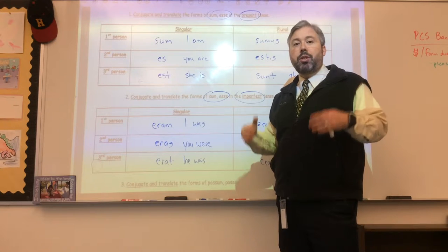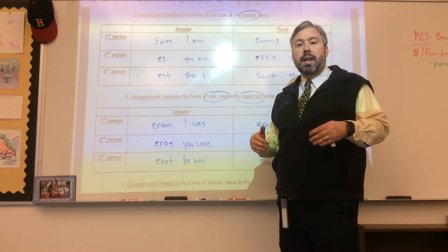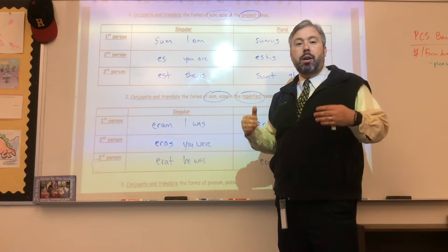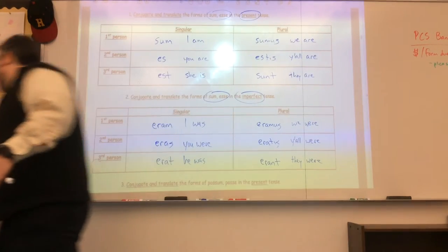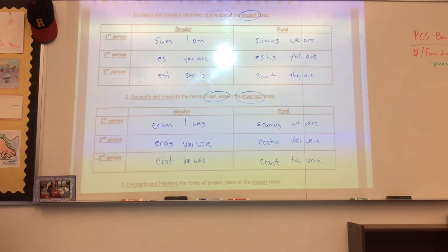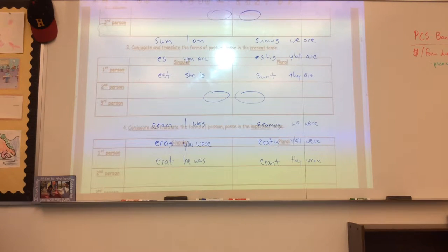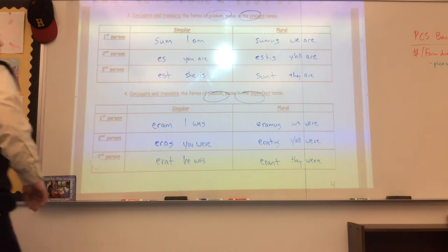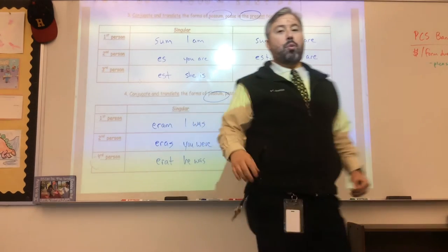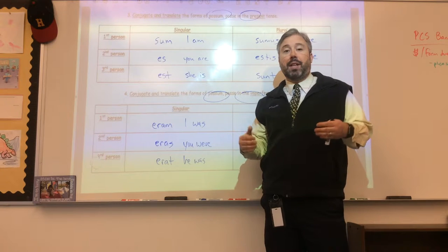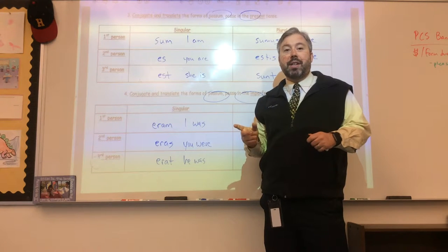So what we're going to do, we're going to use that as a jumping stone to get to the present and imperfect forms of to be able, which is posse in the infinitive. You can see that we're still keeping the forms of to be in the present and the imperfect, which makes it really nice. And there's going to be a pattern to this.